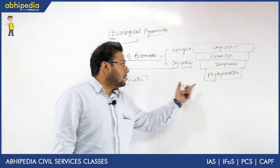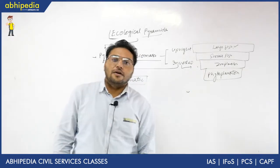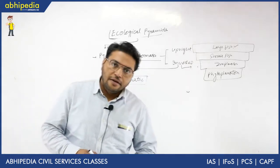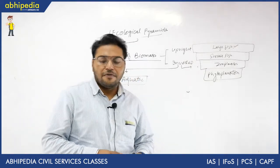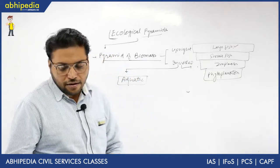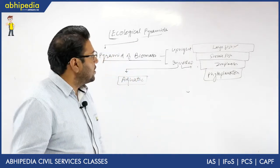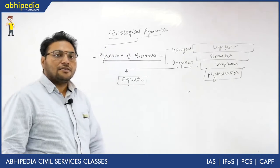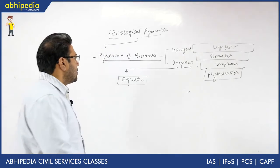So the pyramid of number is inverted in the case of a tree or parasitic food chain, whereas in aquatic ecosystems, the pyramid of biomass is inverted.